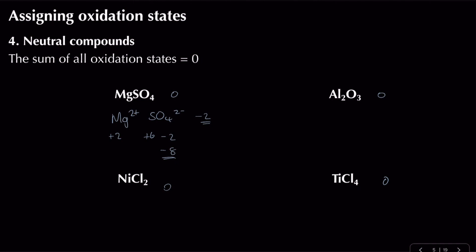For aluminium oxide, aluminium is in group three so it has an oxidation state of +3, and oxygen is −2. For nickel chloride, chlorine is −1 and we have two chloride ions totalling −2, so nickel must be +2. For titanium chloride (TiCl₄), with four chlorines each at −1 giving −4, titanium must be +4 — a variable oxidation state typical of transition metals.